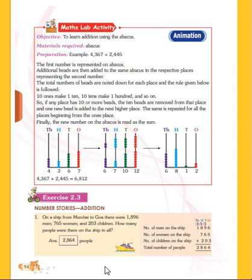Let's see how we can solve number stories. Here we have Exercise 2.3. The first question is: on a ship from Mumbai to Goa there were 1,896 men, 765 women, and 203 children. How many people were there on the ship in all? Here the quantity of people is given. We have to calculate the total number of people present on the ship.